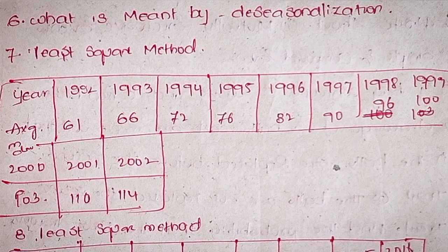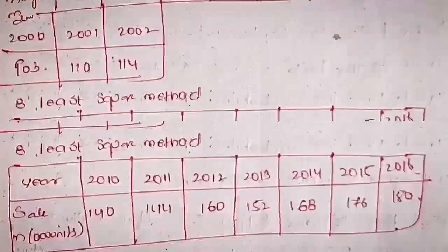Sixthly, what is meant by de-seasonalization? Seventhly, least square method. Year: 1992, 1993, 1994, 1995, 1996, 1997, 1998, 1999, 2000, 2001, 2002. Average mode values: 61, 66, 72, 76, 82, 90, 96, 100, 103, 110, 114.